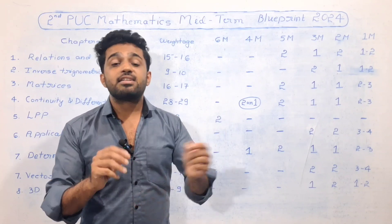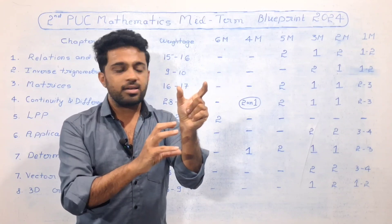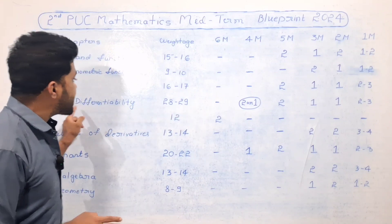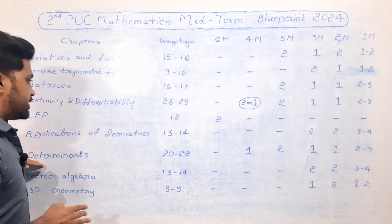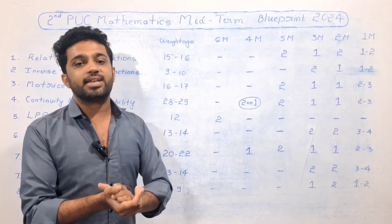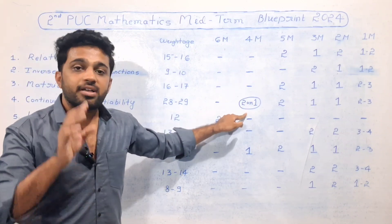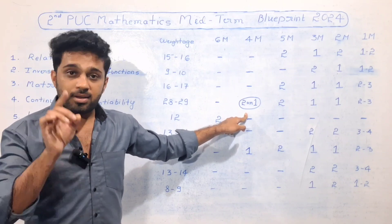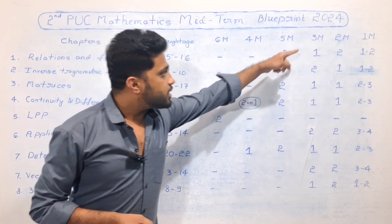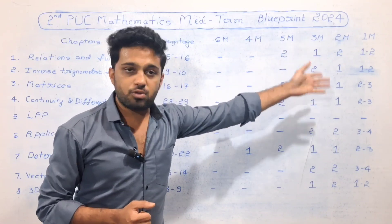Question number 47 will be asked from Continuity and Differentiability. This is confirmed for the mid-term syllabus. There are 4 to 5 mark questions from this chapter, and also an 8-mark question. Overall this is a very high scoring chapter.